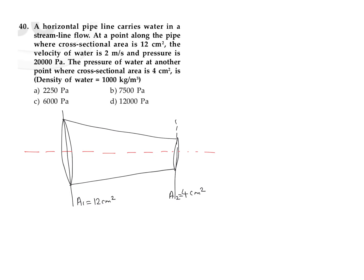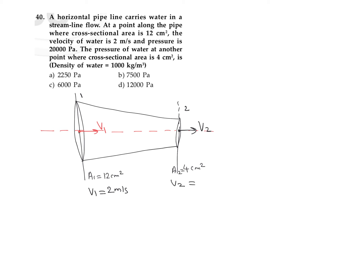The velocity of water at the 12 centimeter square section is V1, and the value of V1 is given as 2 meter per second at point 0.1. The velocity at point 0.2 is taken as V2, which we need to find. The pressure at point 0.1 is P1, given as 20,000 Pascal, and we need to find the pressure at point 0.2, which is P2.